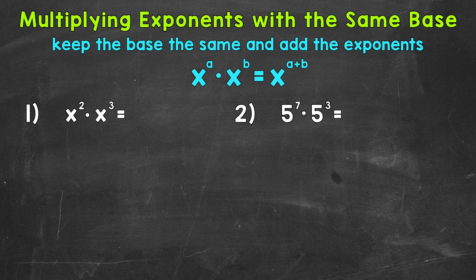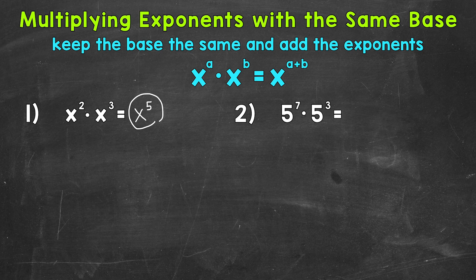Starting with number 1, where we have x squared times x cubed. The first thing we do, we keep the base. So our base is x. And then we add the exponents. So we have an exponent of 2 and an exponent of 3. 2 plus 3 equals 5. So our final answer is x to the power of 5.